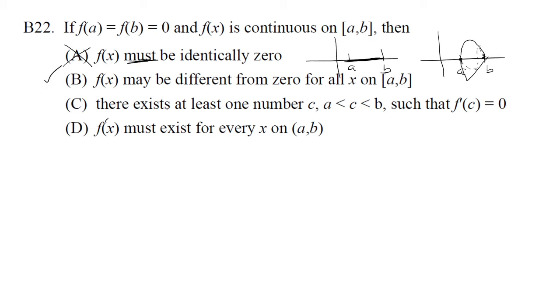Part C, there exists at least one number c in the interval from a to b, such that f prime of c is zero. This is basically talking about the mean value theorem.